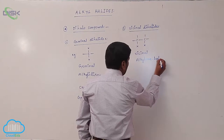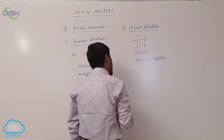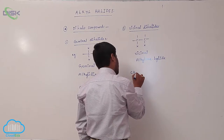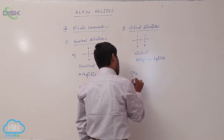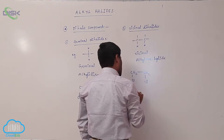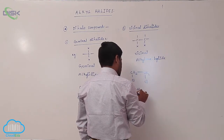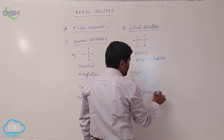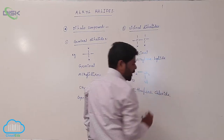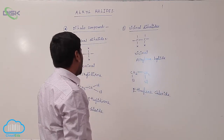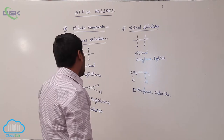Alkylene halide. Example: ethylene chloride. So one is geminal dihalide and another one is vicinal dihalide.